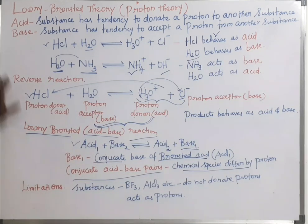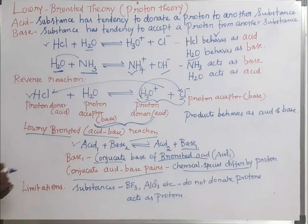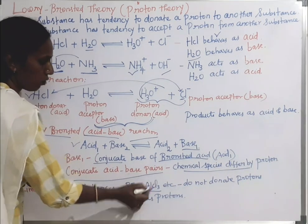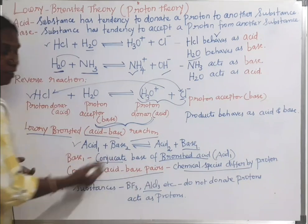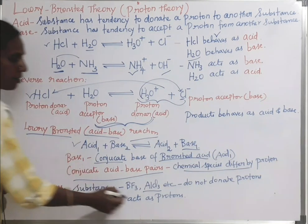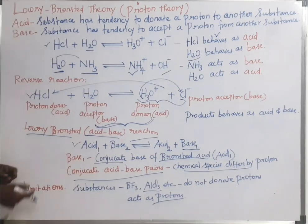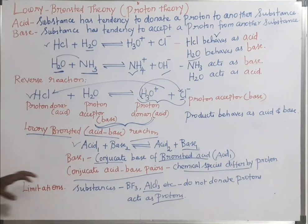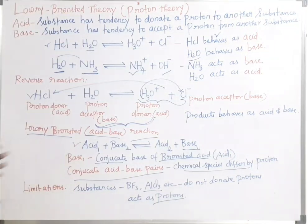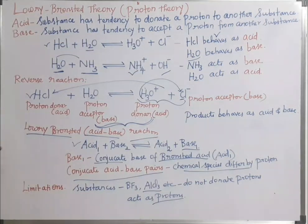Now let us see the limitations of Lowry-Bronsted theory. Substances such as boron trifluoride (BF₃) and aluminum trichloride (AlCl₃) do not donate protons, but they still act as acids. This behavior cannot be explained by Lowry-Bronsted theory, and that is its limitation.